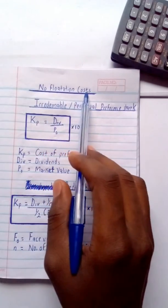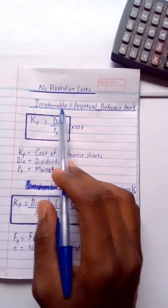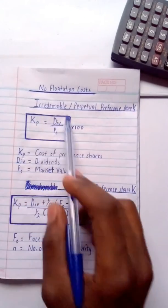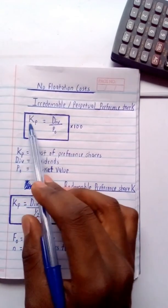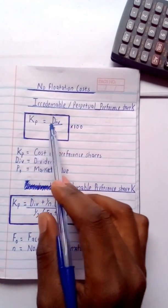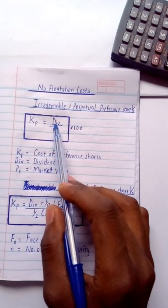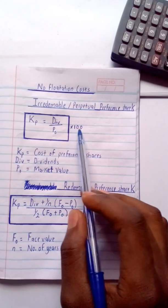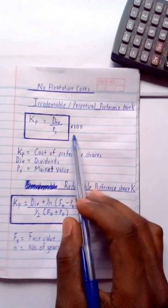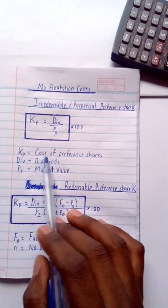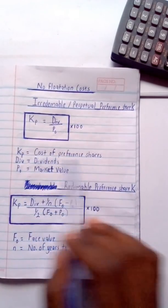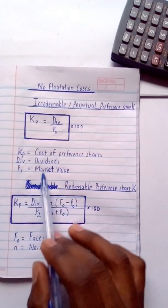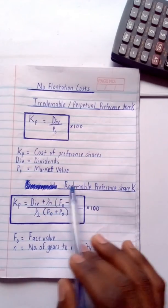When we have no flotation costs, under irredeemable or perpetual preference share capital, we are going to use this formula: Kp = (Div / P₀) × 100, where Kp is the cost of preference shares, Div is dividends, and P₀ is the market value. The answer is expressed as a percentage.